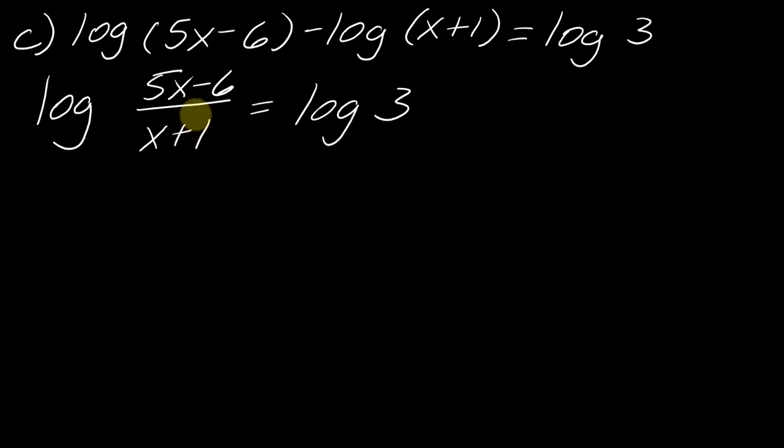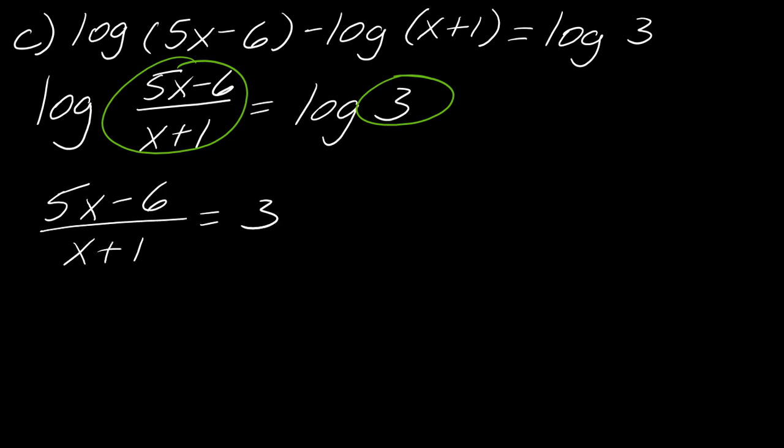So now when you have everything set up like this, you have one log equal to another log. Well, when this happens, now it's actually a much simpler situation. You can really just get rid of the logs and just take the insides effectively. Now we're not canceling out the logs. It's really more that we're just taking out the insides and setting them equal to one another. And so that's what I'm going to do. I'm going to take this 5x minus 6 over x plus 1 equals 3.